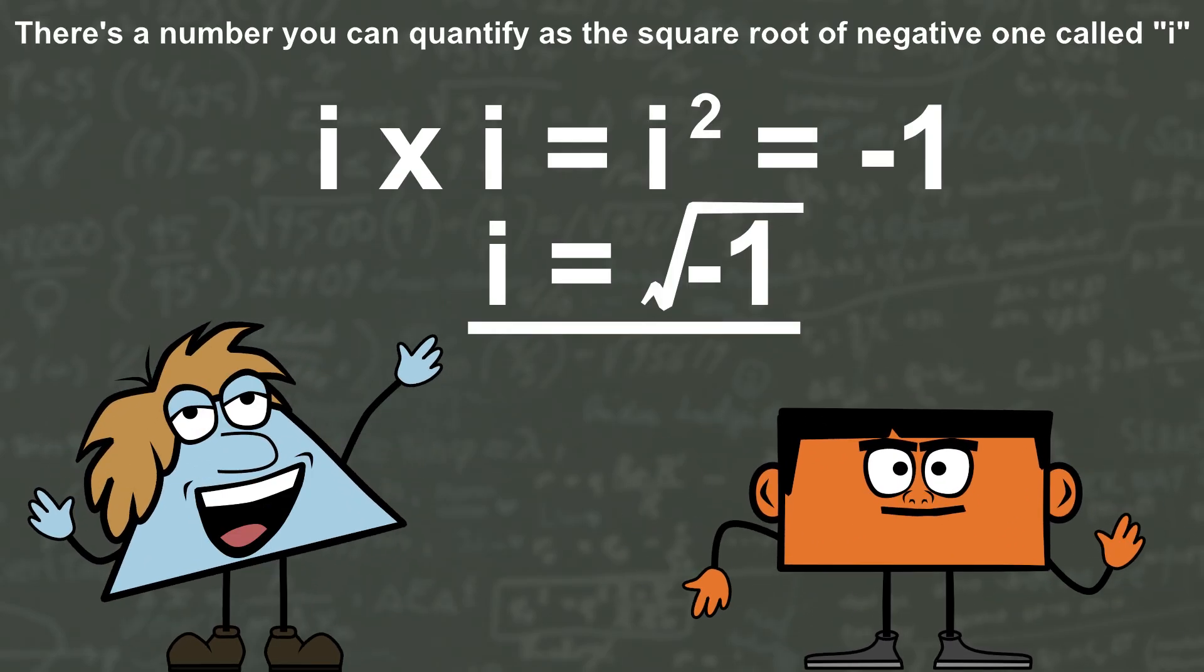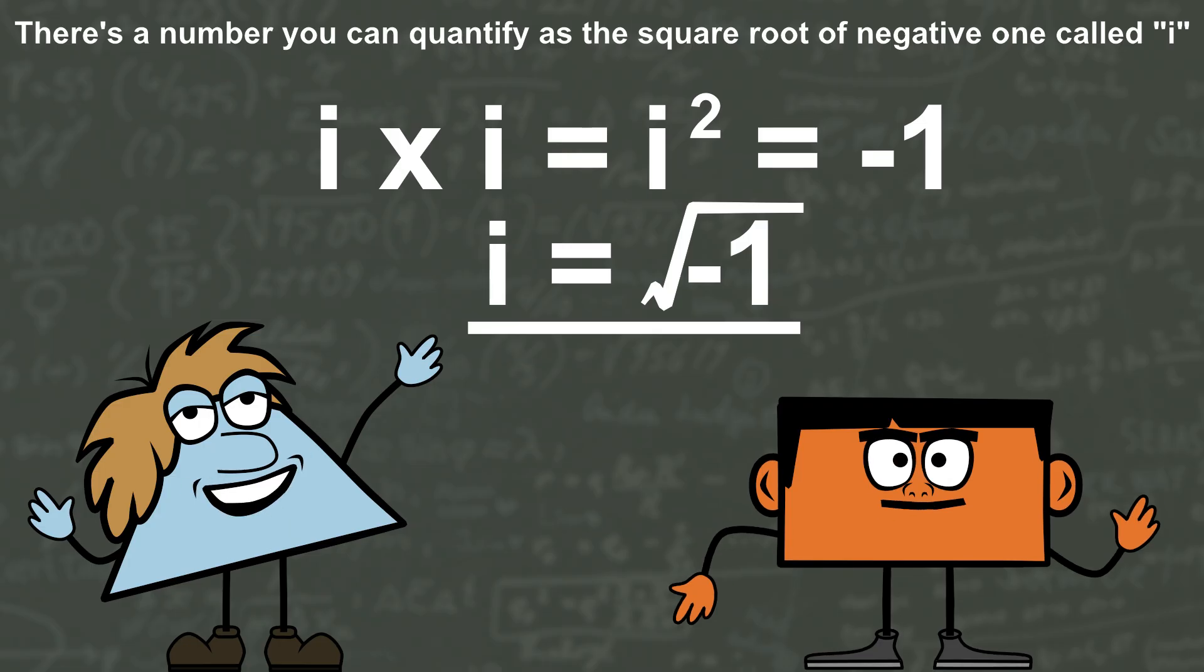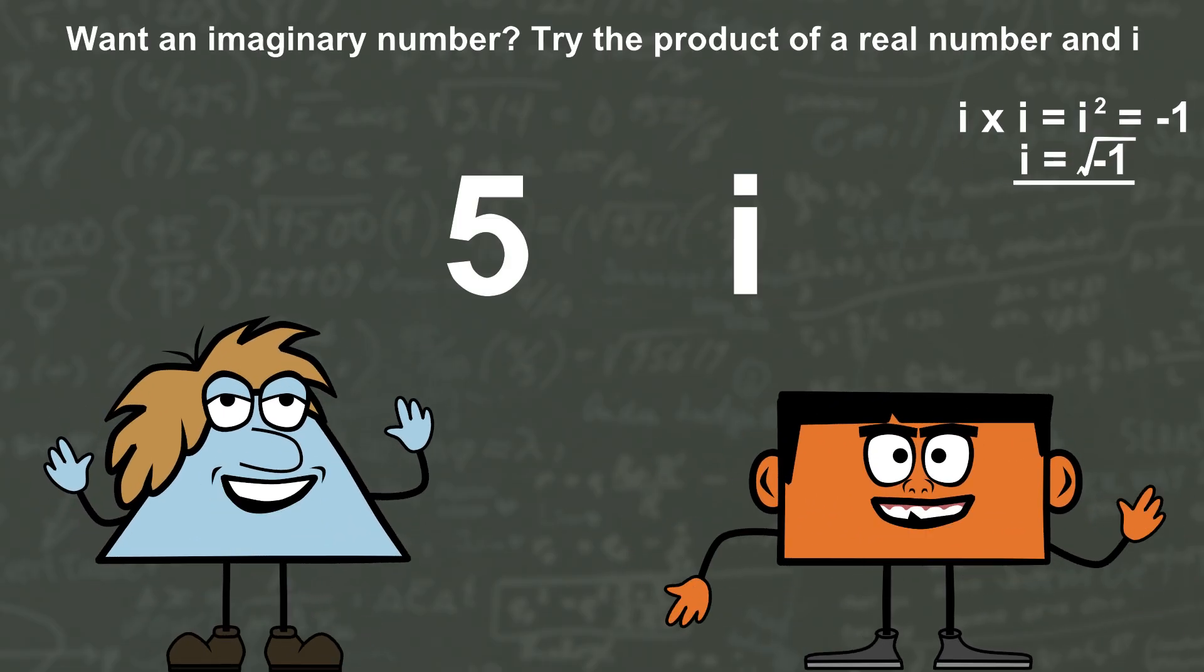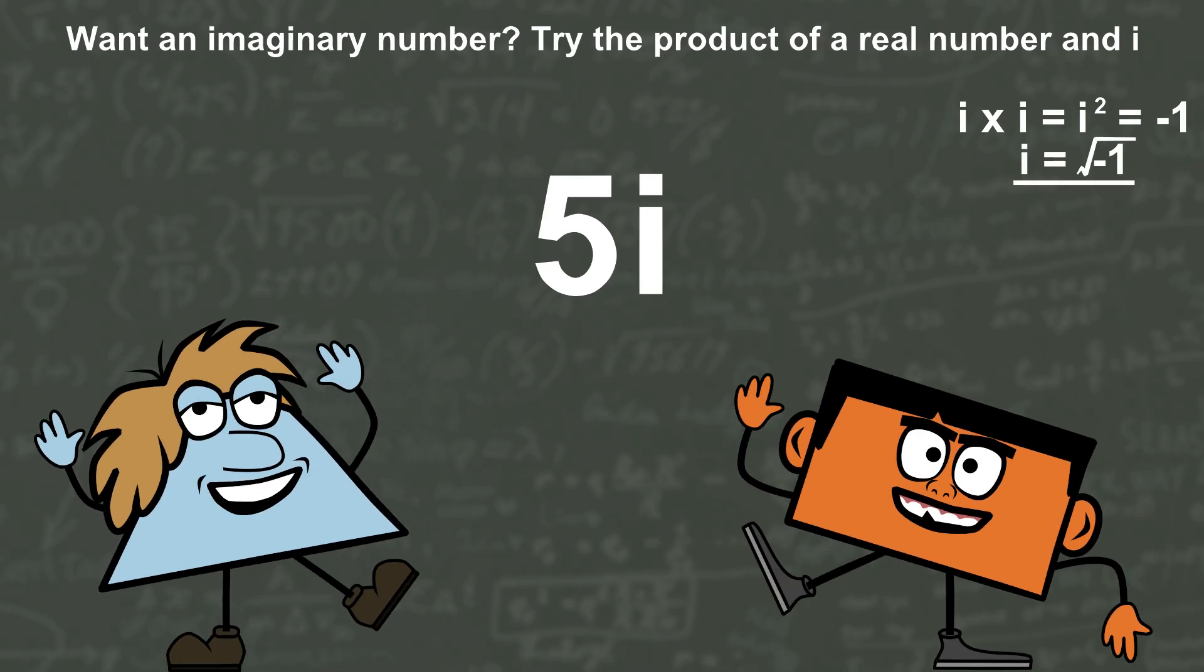There's a number you can quantify. There's a square root of negative one called i. Want an imaginary number? Try the product of a real number and i.